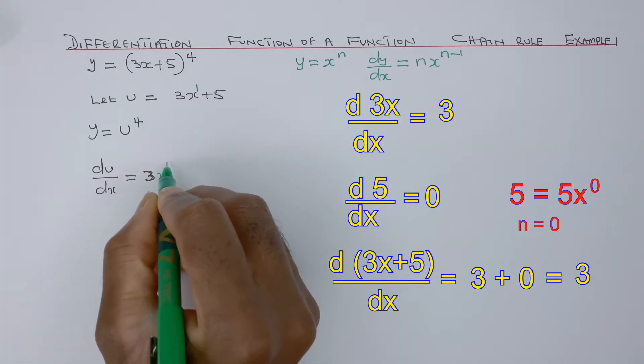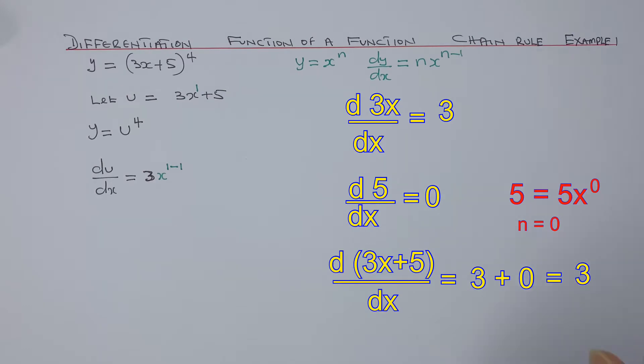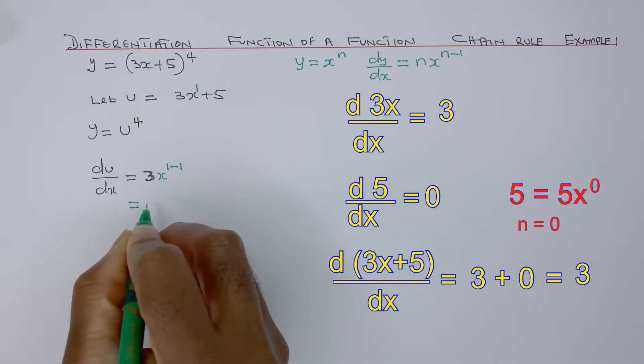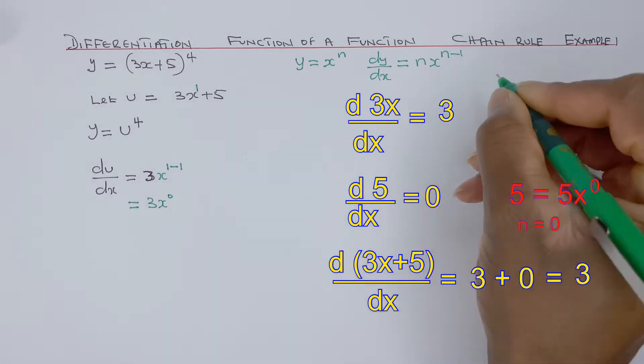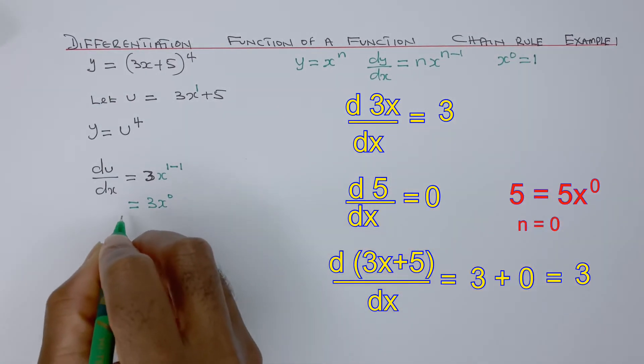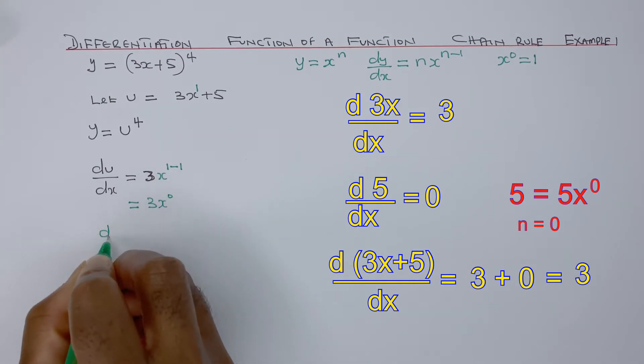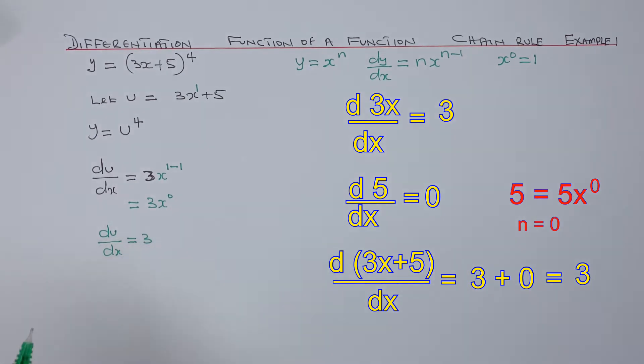Then we have x to power 1 minus 1, so that's 1 minus 1, which becomes 3x to power 0. We know that x to power 0 equals 1, so therefore du/dx equals 3, because that's 3 times 1.